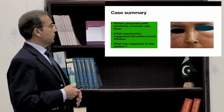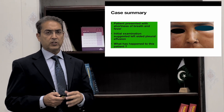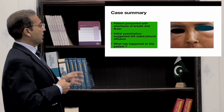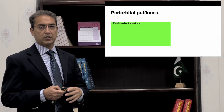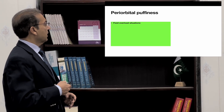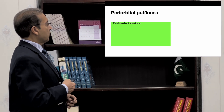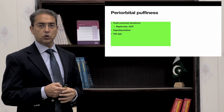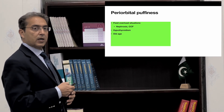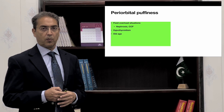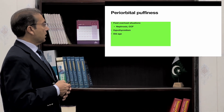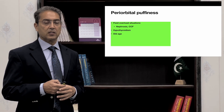Looking at this picture, the patient shows some periorbital puffiness which is slightly asymmetrical, more on the left side. Periorbital puffiness may be due to a fluid overload situation — for example, patients who have nephrotic syndrome or congestive heart failure, especially right-sided heart failure. It can also occur in hypothyroidism, old age where subcutaneous tissues become lax and eye bags form, angioedema, orbital cellulitis, orbital tumors, or subcutaneous emphysema.